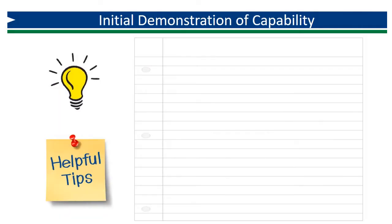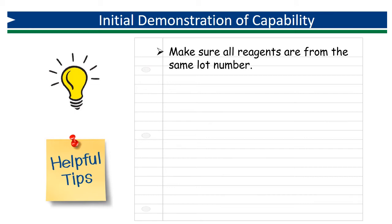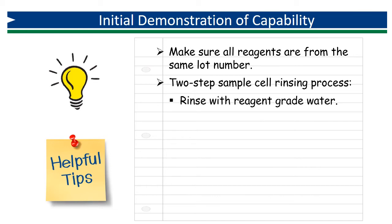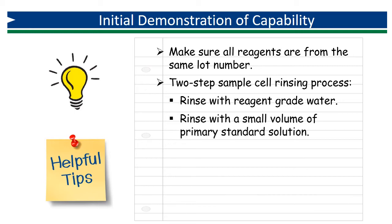Here are a few tips to help you eliminate sources of error. Make sure all reagents are from the same lot so they are all designed for the same sample size and have the same degree of interference. Use a two-step rinsing process between analyses: start by thoroughly rinsing your sample cell with distilled water to remove all traces of residual reagent, then rinse it again with a small volume of prepared standard to displace the remaining distilled water.